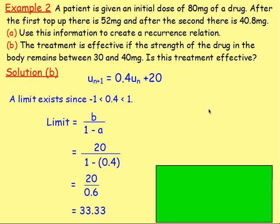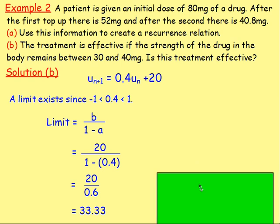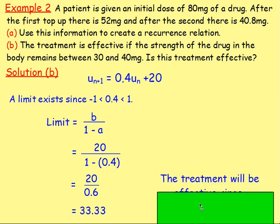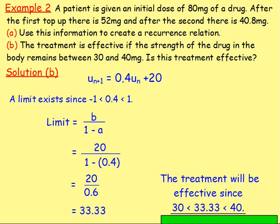Substituting in the values: limit equals 20 over (1 minus 0.4), which is 20 over 0.6, giving us 33.33 recurring. We know the amount of drug that will be in the patient's body in the long run is 33.33 milligrams. The treatment will be effective since 33.33 is between 30 and 40.